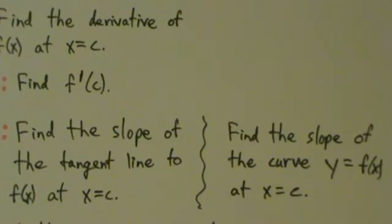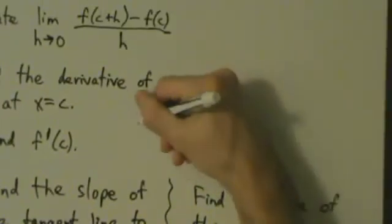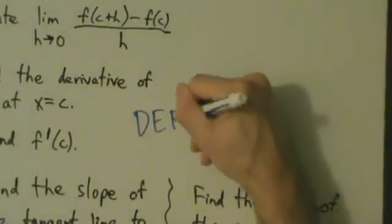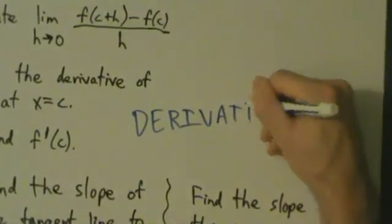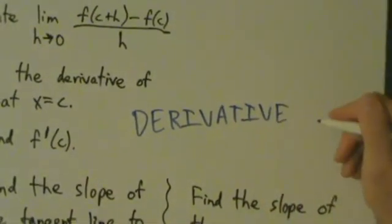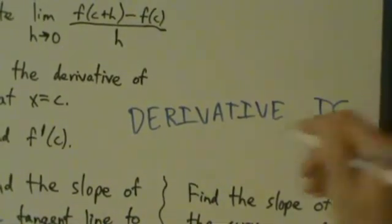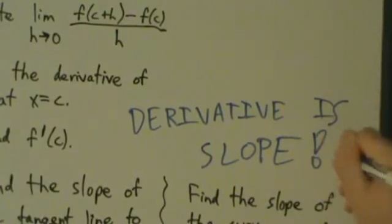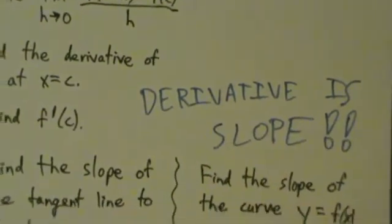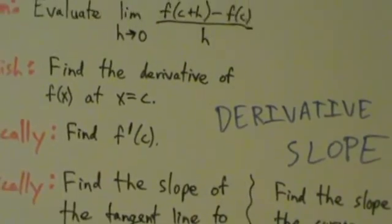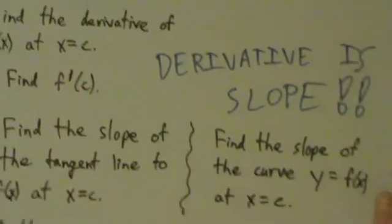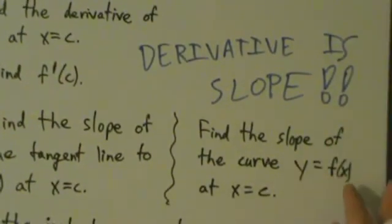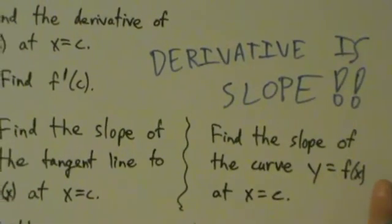What's really important to remember in general - always definitely remember this - is that derivative is slope. Derivative and slope are the same thing. When you talk about finding the derivative of f(x) at x equals c, that's the same thing as finding the slope of the curve y equals f(x) at x equals c. Derivative and slope are the same thing.